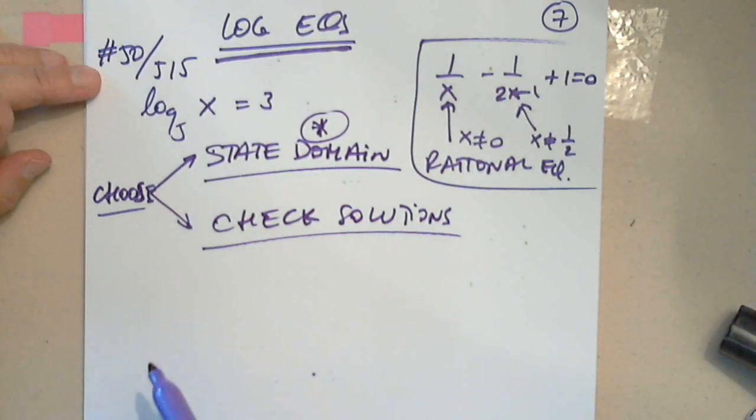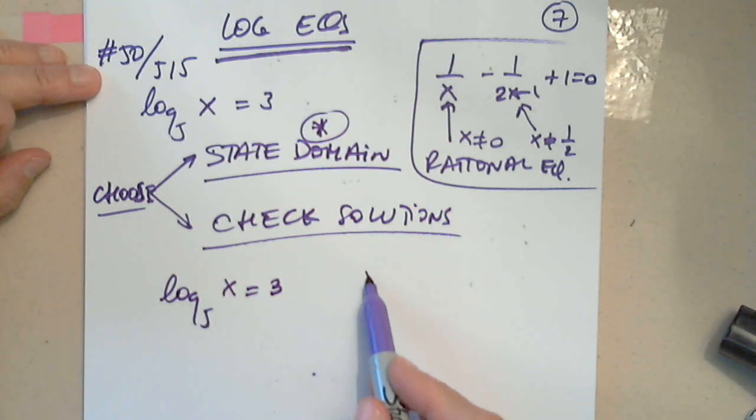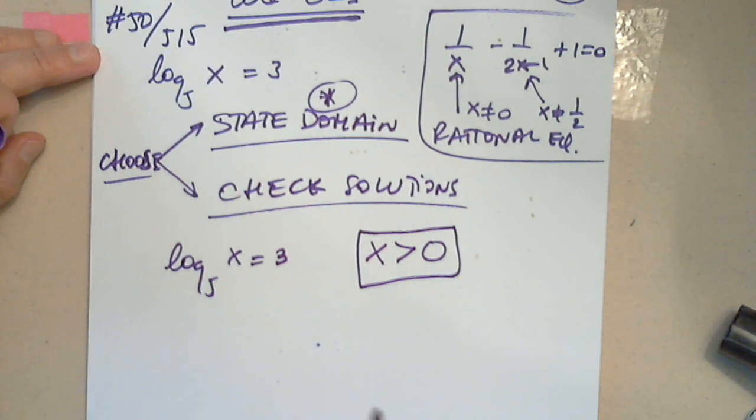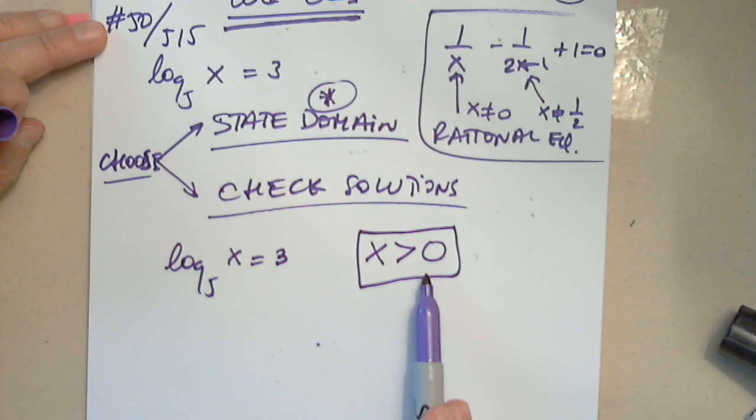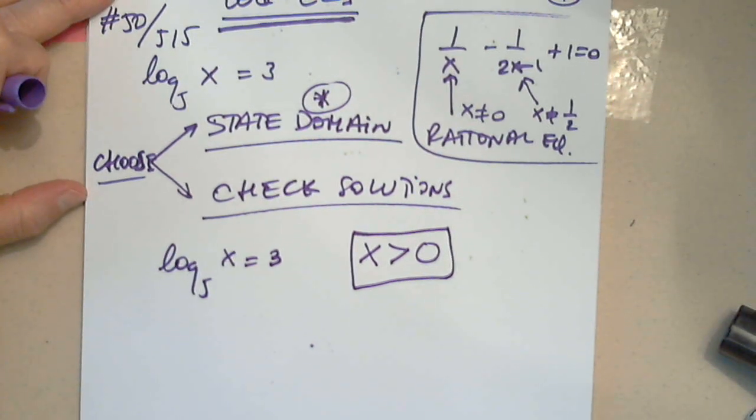So in this case, I have the equation log base 5 of x is 3. I know that log is applied to x. I know that log has to be applied to numbers that are greater than 0. So then when I solve the equation, I'll make sure that it's a number greater than 0. If it's not, I'll say not acceptable.